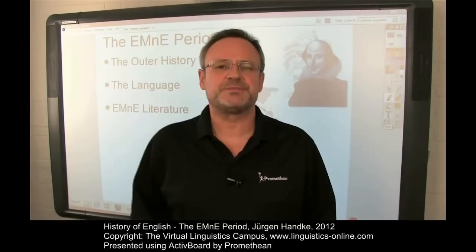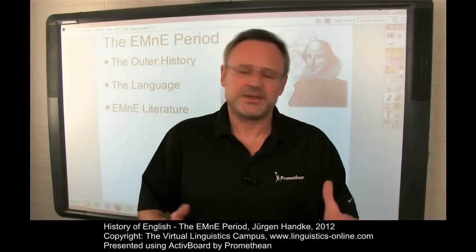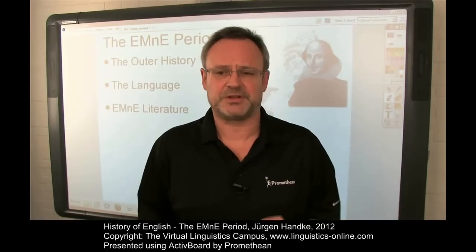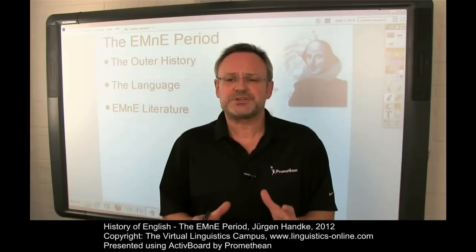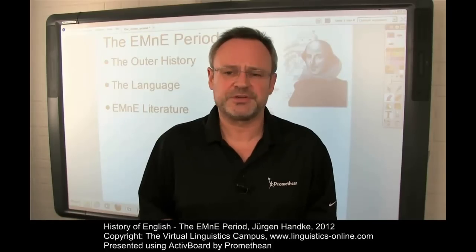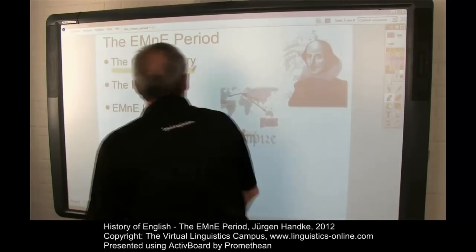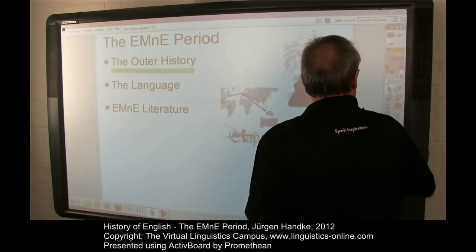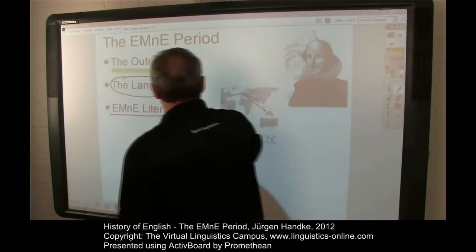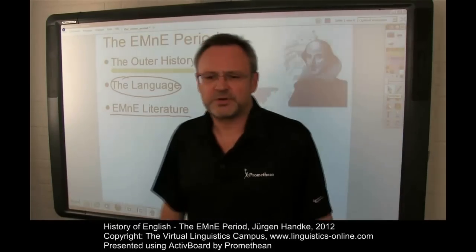This e-lecture introduces the main phases of the outer history of early modern English, including the most important historical details between 1500 and 1700. It discusses the most influential historical events and their impact on the development of English. In particular, we will look at the outer history of the early modern English period, take a brief look at the early modern English language, and finally deal with some selected aspects of early modern English literature.